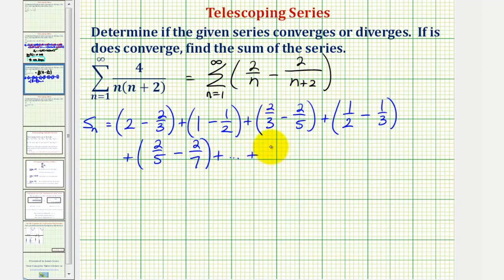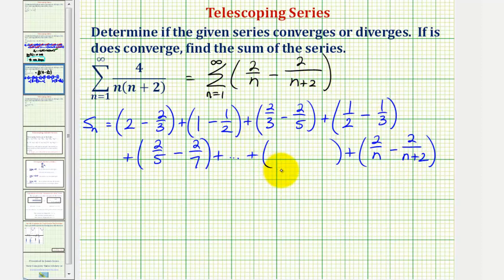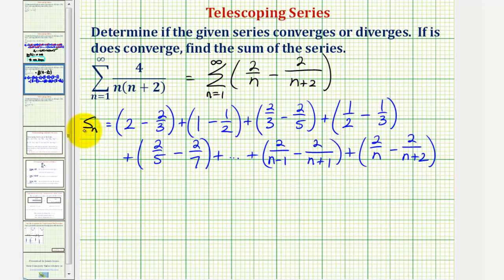Now let's find the last two terms of our series. The last term would be two divided by n minus two divided by the quantity n plus two. And the previous term, instead of n, we'd have n minus one. So for this group, we'd have two divided by n minus one, minus two divided by n minus one plus two, which is n plus one. Now let's begin simplifying to see if we can determine the simplified formula for the partial sum.